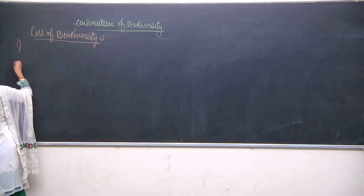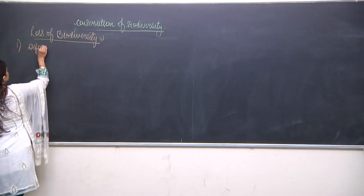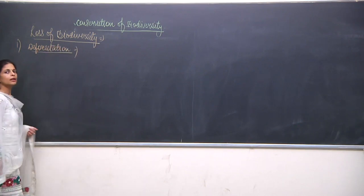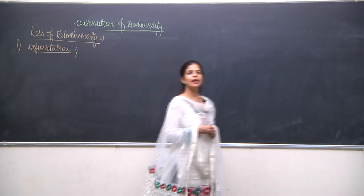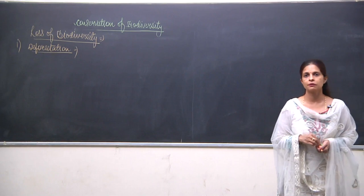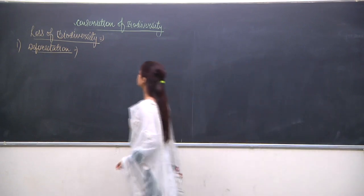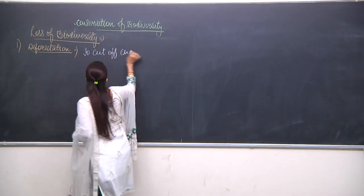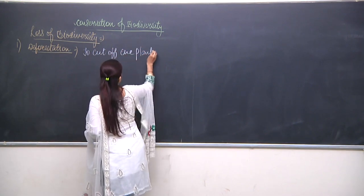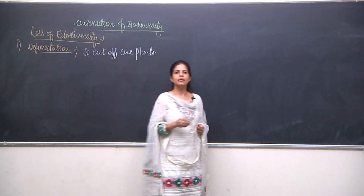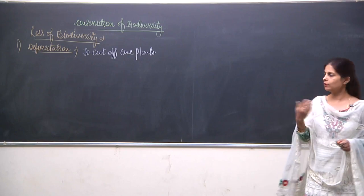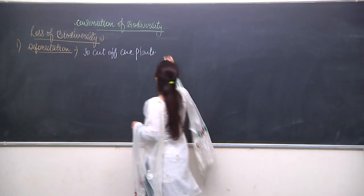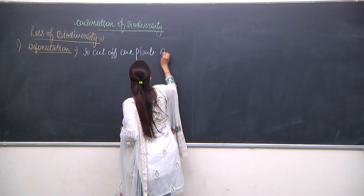There are various reasons. The first is deforestation. Deforestation means cutting off the trees, cutting off the plants. By cutting the trees, the biodiversity gets affected because by cutting the plants we are destroying the habitat.